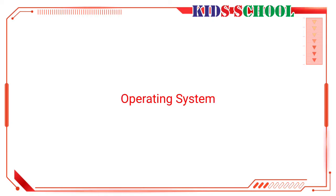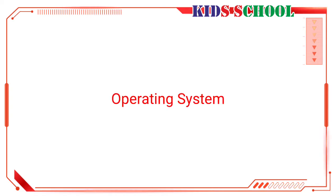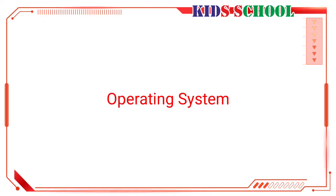Dear students, an operating system is a series of programs that is used to operate a computer. A computer processes data according to programs to give the output. To process any data, a computer needs hardware and software. And to actually run a computer, you need an operating system.